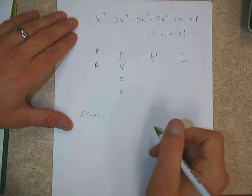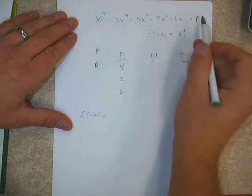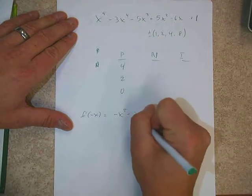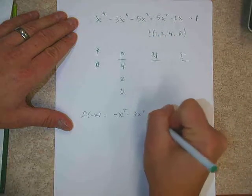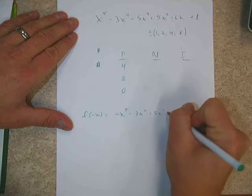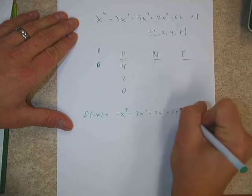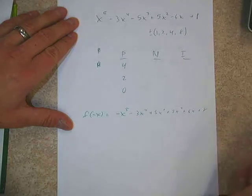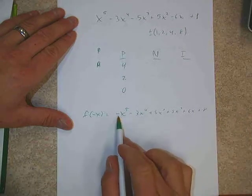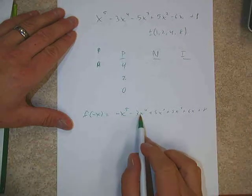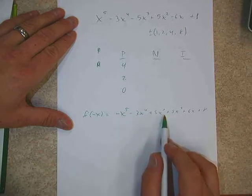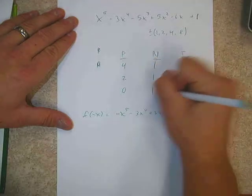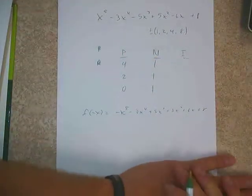If I put a negative x into my function and make a new function, remember all the odd powers are going to change sign. So we're going to have negative x to the fifth minus 3x to the fourth plus 5x cubed plus 5x squared plus 6x plus 8. And we can see that there's only one sign change, which means there is one negative root.